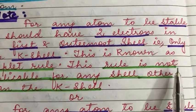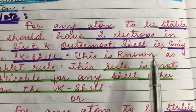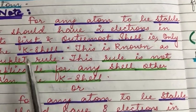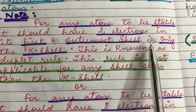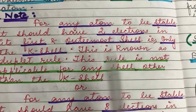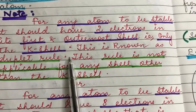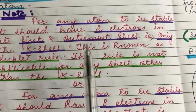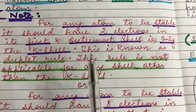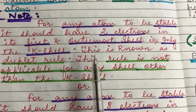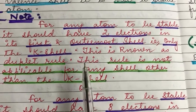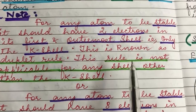For any atom to be stable it should have two electrons in its first and outermost shell — that is, only the K shell. So if any atom has two electrons in only the K shell, then it is said to follow the duplet rule.